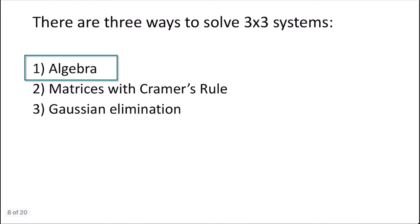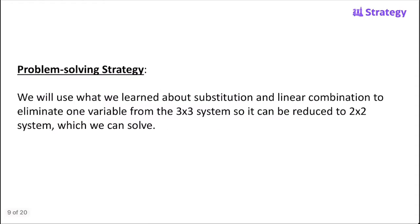There are three ways to solve three-by-three systems. The first method is algebraically, which is what we're talking about in today's video. Then we'll do matrices with Cramer's rule in the next lesson, and finally wrap up this unit with Gaussian elimination. We're going to use substitution and linear combination to eliminate one variable from our three-by-three system, turning it into a two-by-two system, which we already know how to solve.